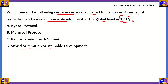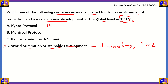Option D is the World Summit on Sustainable Development, which took place in Johannesburg and the year was 2002. So option D is incorrect. What about option A, the Kyoto Protocol? The Kyoto Protocol was signed in 1997 and brought into effect in February 1998. Therefore, option A is also incorrect because the summit in question happened in 1992.